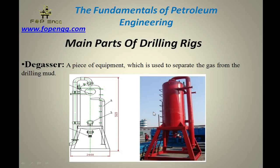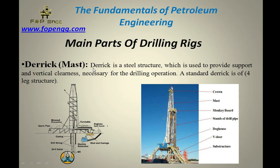Derrick — we can also call it a mast. The derrick is a steel structure used to provide support and vertical height necessary for the drilling operation. The derrick is a four-leg structure: one, two, three, and four. This figure shows a very good example of the derrick or mast. The mast is below the crown block.